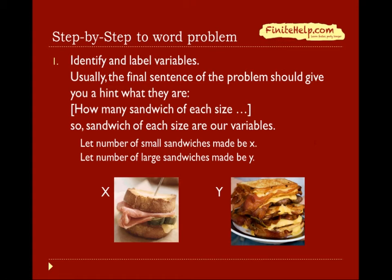The first step is to identify and label our variables. After all, if there were no variables, there would be nothing to solve for. We are trying to find out what the variables are and solve for them. Usually, the final sentence of the problem will give you a hint of what they are. The last sentence says, how many sandwiches of each size. From this sentence you can infer that sandwiches of each size are our variables. Here I am going to make number of small sandwiches made to be x. The number of large sandwiches made to be y. You can call them whatever letter you want, but I just like to use x and y here.